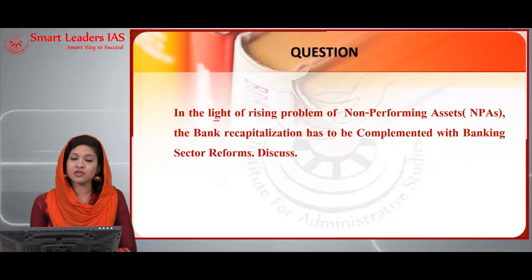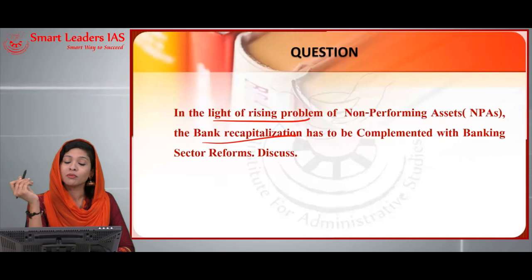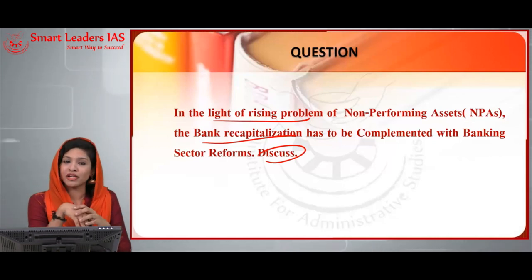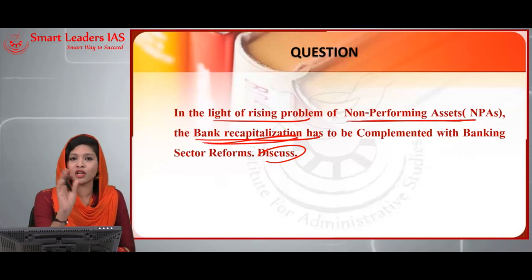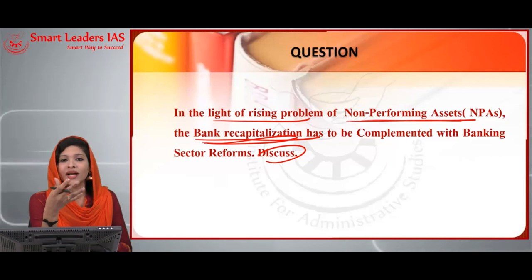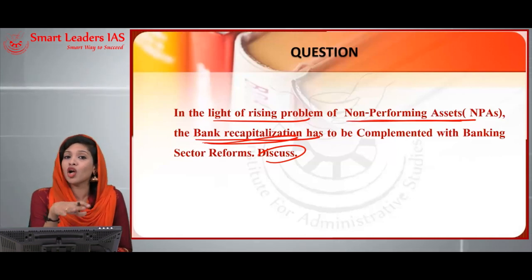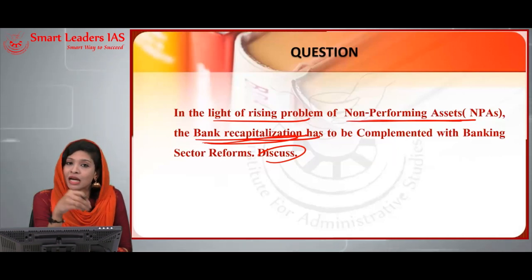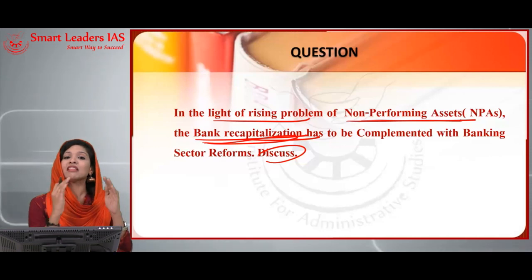The first question is: 'In the light of the rising problem of NPA, bank recapitalization has to be complemented with banking sector reforms — discuss.' The keyword is 'discuss,' meaning you have to give an elaborate explanation. Here you have two things: non-performing assets and bank recapitalization. An asset is said to be non-performing when a loan or advance is not repaid back for a specified period of 90 days.